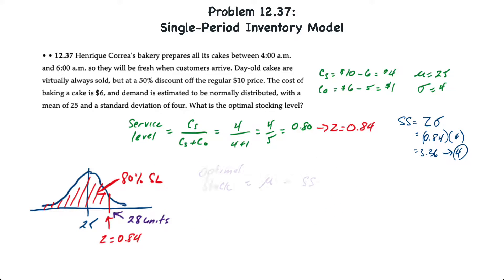The optimal stock level then is calculated as the mean demand plus the safety stock. We know the mean demand is 25 and the safety stock is calculated as Z times the standard deviation. So we take 25 plus a Z value of 0.84 times the standard deviation of 4, and that will result in a total of about 27.36 cakes, but you can't have a partial cake so you'd round that up to 28 cakes.